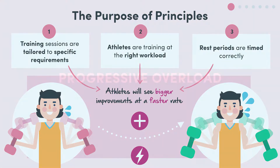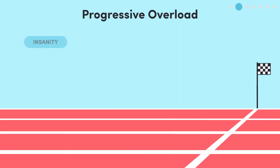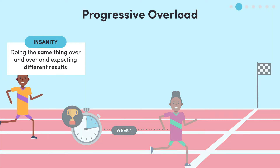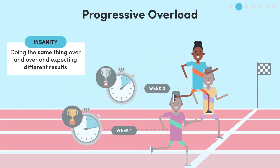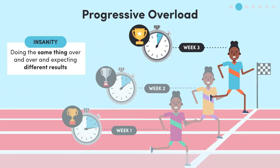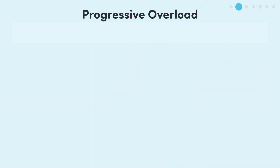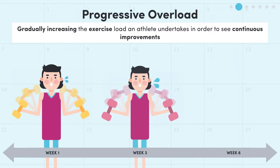Our first principle is progressive overload. They say the definition of insanity is doing the same thing over and over and expecting different results. Whoever said that knew a thing or two about progressive overload. This principle is about gradually increasing the exercise load an athlete undertakes in order to see continuous improvements.